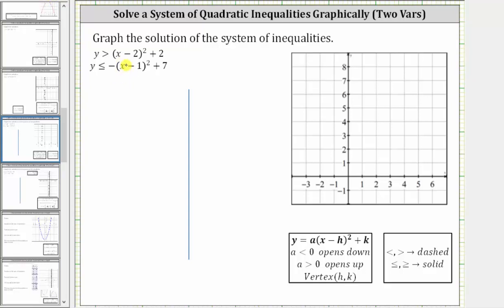For the next step, let's write the corresponding quadratic functions. For the first inequality, the corresponding quadratic function is y equals the quantity x minus two squared plus two. And for the second inequality, the corresponding quadratic function is y equals the opposite of the quantity x minus one squared plus seven. When we graph these, remember the first parabola is going to be dashed, and the second parabola will be solid.